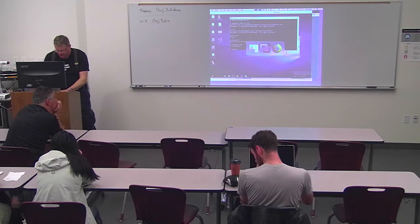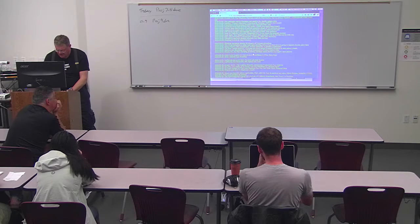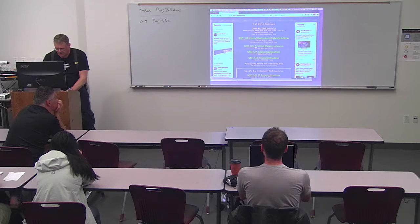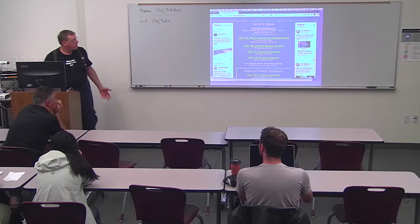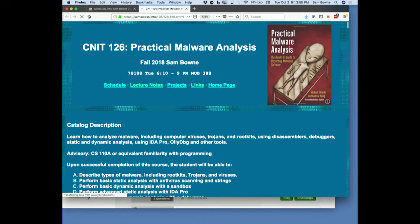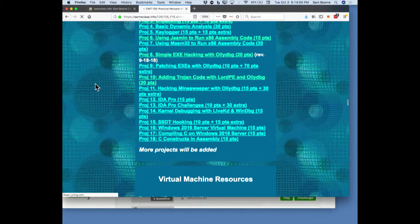Let me say a word about the projects. These are the last official required projects in the class. Anything after this will be extra credit. There's the last three projects. We'll cover them tonight. This is where you set up Server 2016, compile C, and disassemble your compiled code to see how it looks in assembly, which is the issue in this week's chapter: how to spot C constructs in assembly.